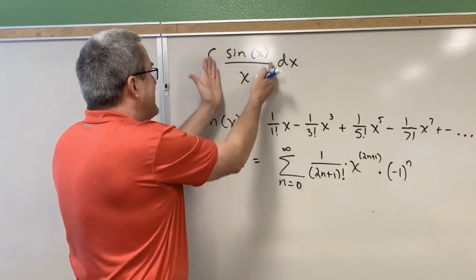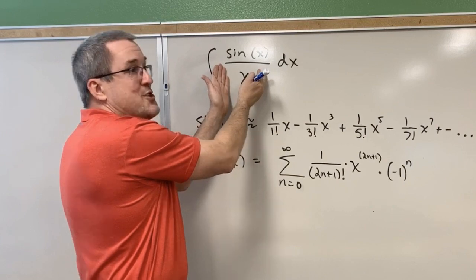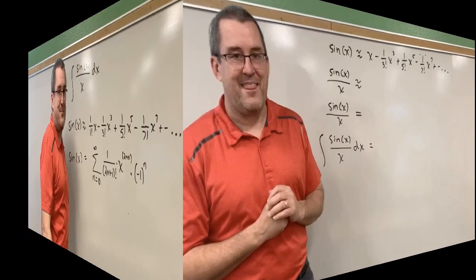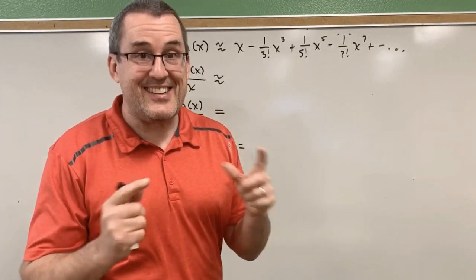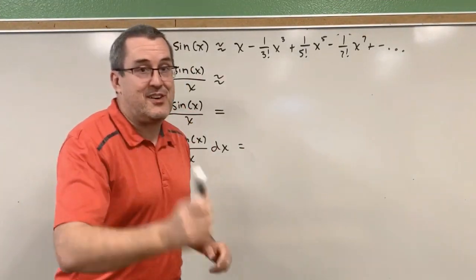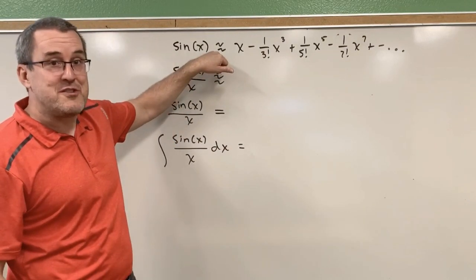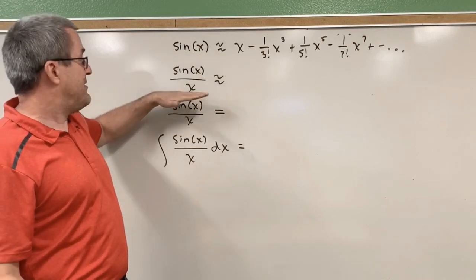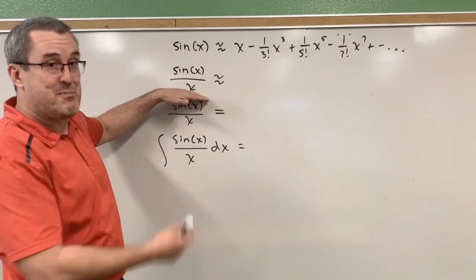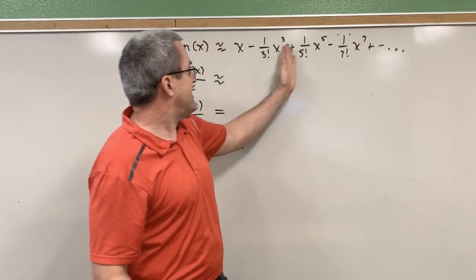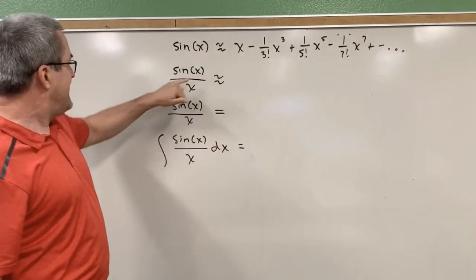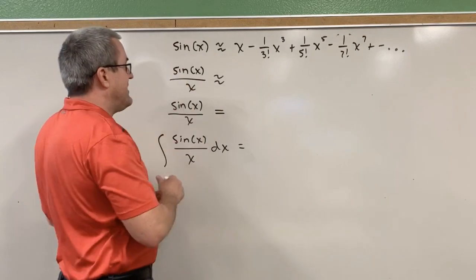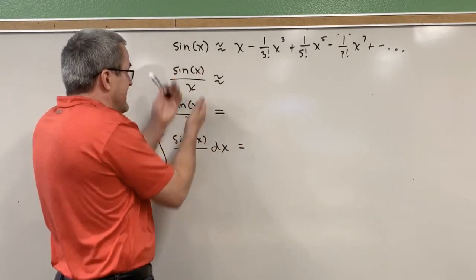Imagine: what if sine of X over X was a polynomial? Could you then find an antiderivative? Yes. So let's integrate sine X over X. First, let's get a Taylor polynomial approximation for sine of X over X. We have one for sine of X — how do we get one for sine of X divided by X? Well, you pretty much do what it says: take the sine of X, which is approximated by this polynomial, and divide it by X. So imagine dividing every term in the Taylor polynomial for sine of X by X to get sine of X over X.